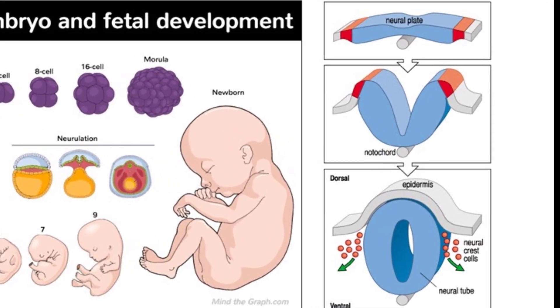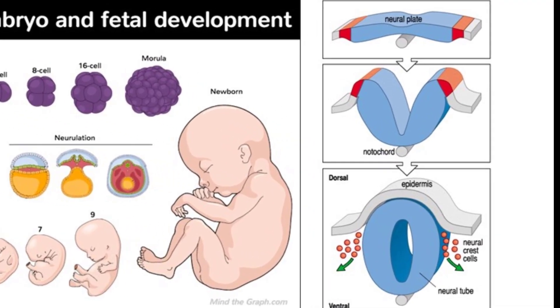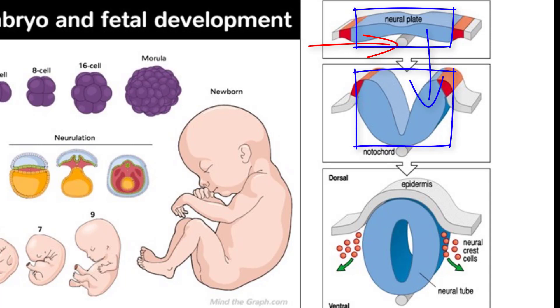This image is a zoomed-in picture of the process. The notochord signals the ectoderm cells to differentiate into the neural plate, which then folds in on itself, creating this structure called the neural tube.